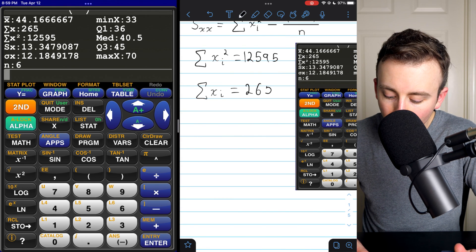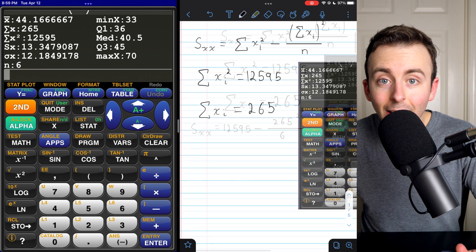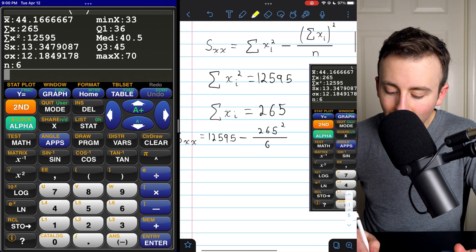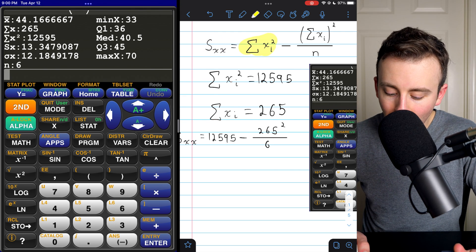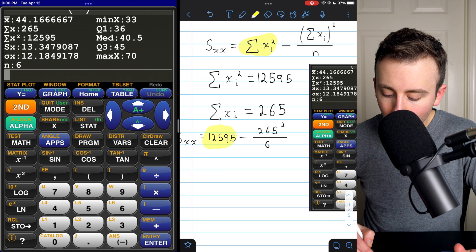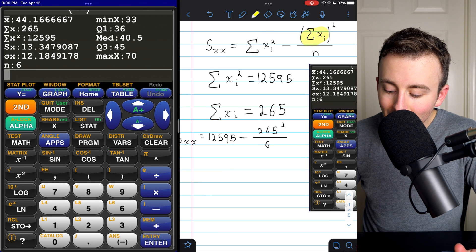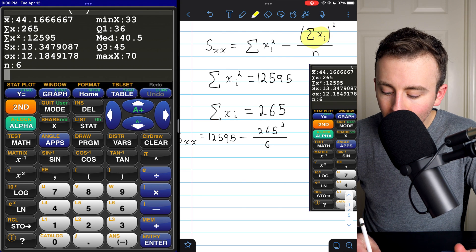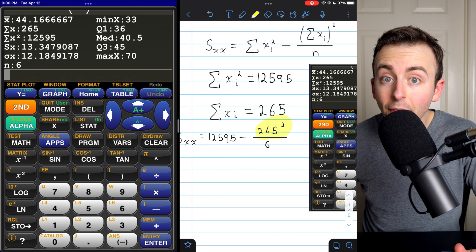Now that I've got these two numbers, I can plug them into the formula for SXX and be on my way. The formula tells us that SXX is going to be the sum of the squared data values, and that is 12,595. And then we subtract the sum of the data values squared. So that's 265 squared, which is written there.